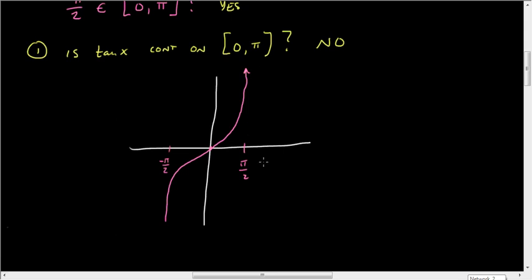And so we have a distinct problem there. So it is not continuous on the interval from zero to π. We have issues. And then it just kind of wanders off and does the same thing and repeats at 3π over 2.